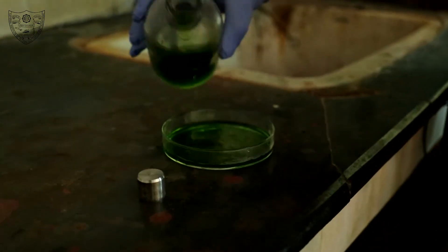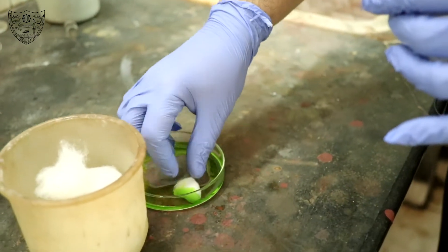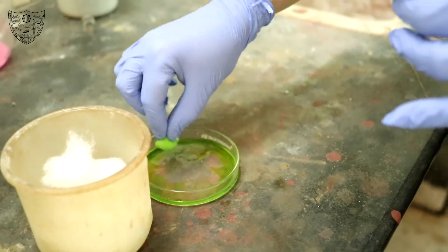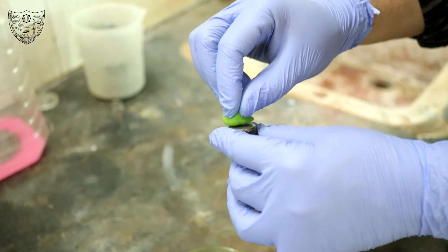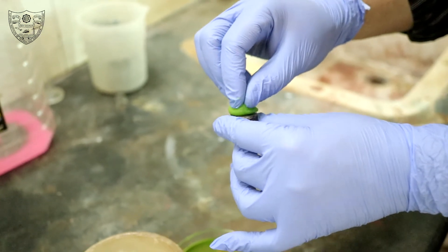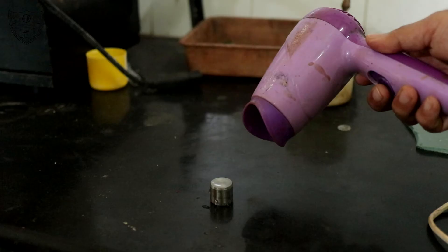We etch the specimen with marbles reagent by dipping a cotton swab in the watch glass filled with the etchant. Rub the swab gently on the polished surface for about 10 to 15 seconds. Wash the sample and dry.